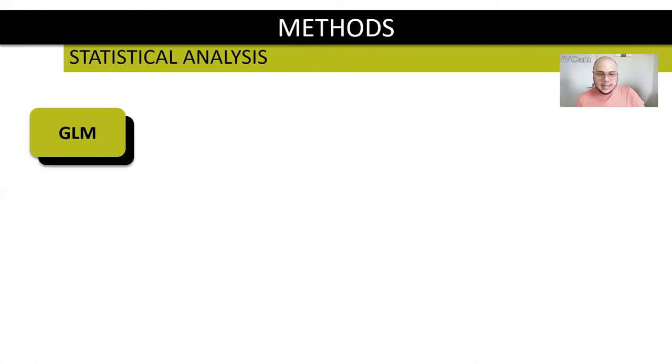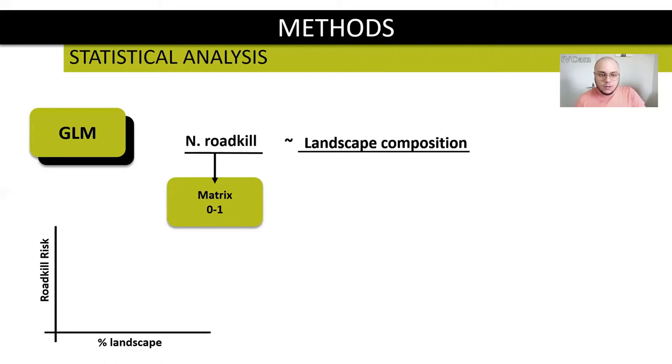For statistical analysis, we built generalized linear models where our dependent variable is the number of roadkills. It is the matrix of zeros and ones. So our model is a binomial model, and the explanatory variables are the percentage of land cover of each landscape.